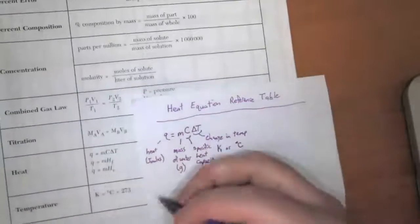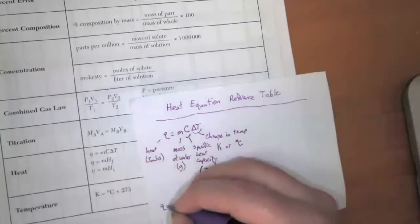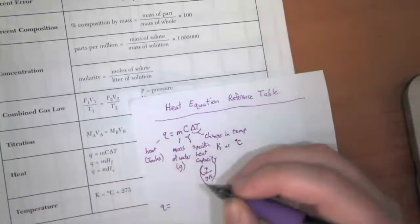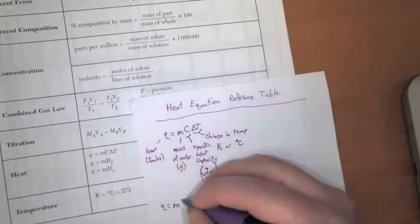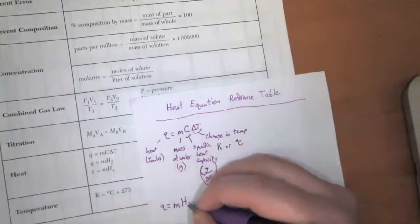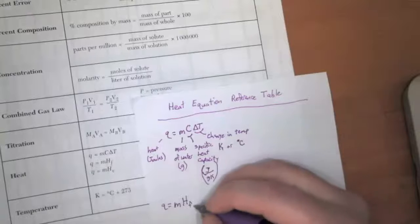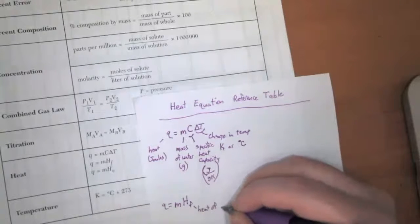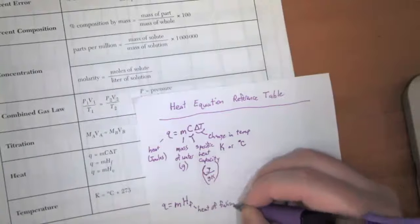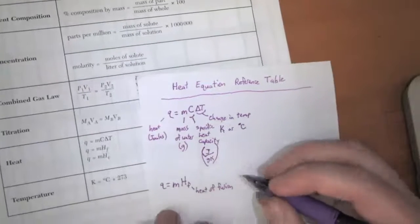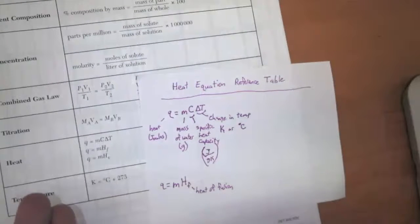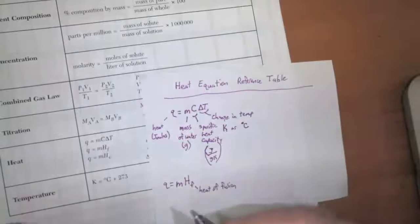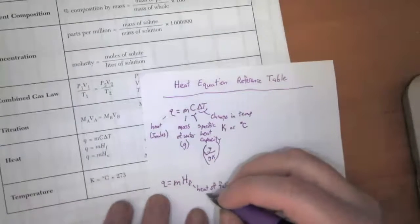There are two more equations here. There's Q is equal to M times H_F. So here H_F is the heat of fusion. And so we use this when we're talking about liquid water turning into ice or ice turning into liquid water, but it's staying at zero degrees Celsius.